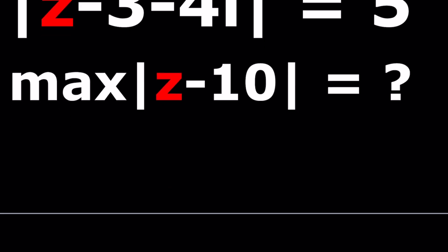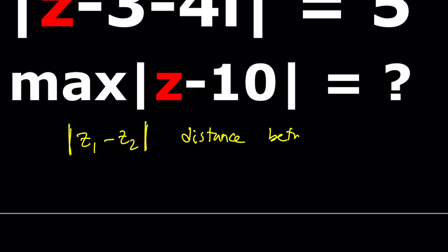First of all, if you have the absolute value of Z₁ minus Z₂, this basically represents the distance between Z₁ and Z₂. So on the Argand plane, this gives you the distance between two complex numbers. If Z₁ is 0, that is the origin, then you're talking about the distance between the complex number and the origin, which is the same thing as the modulus, or the absolute value of that number.